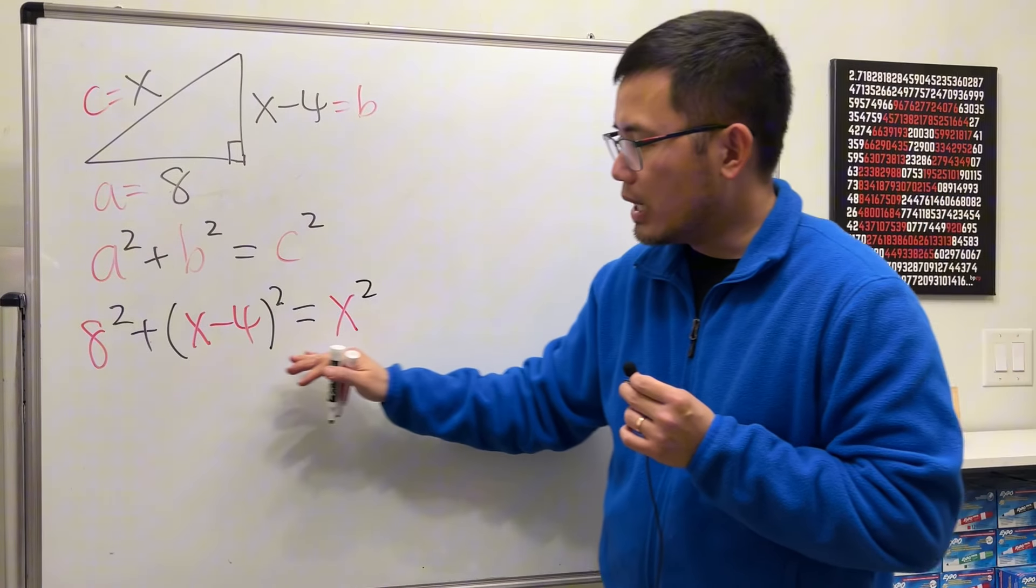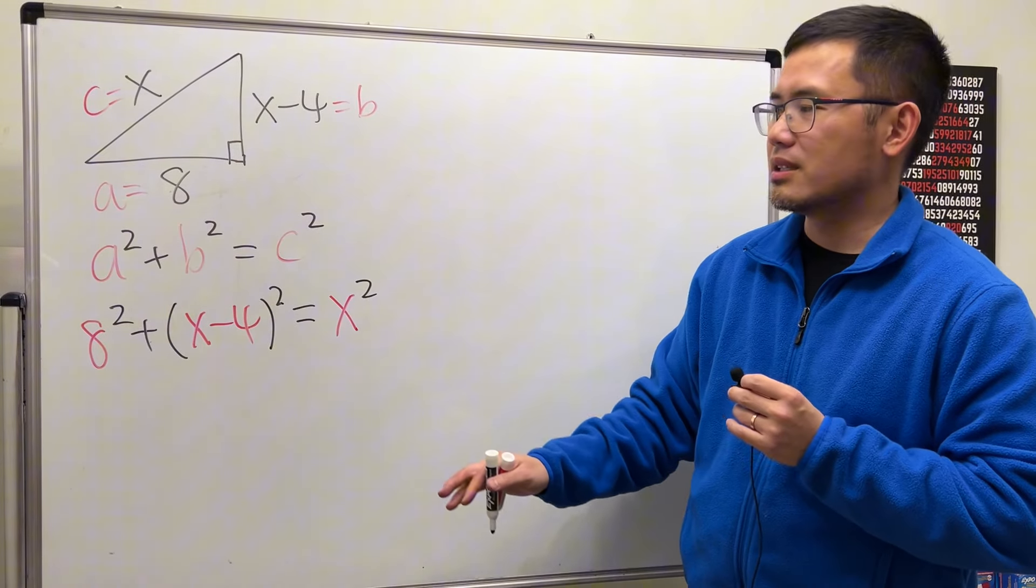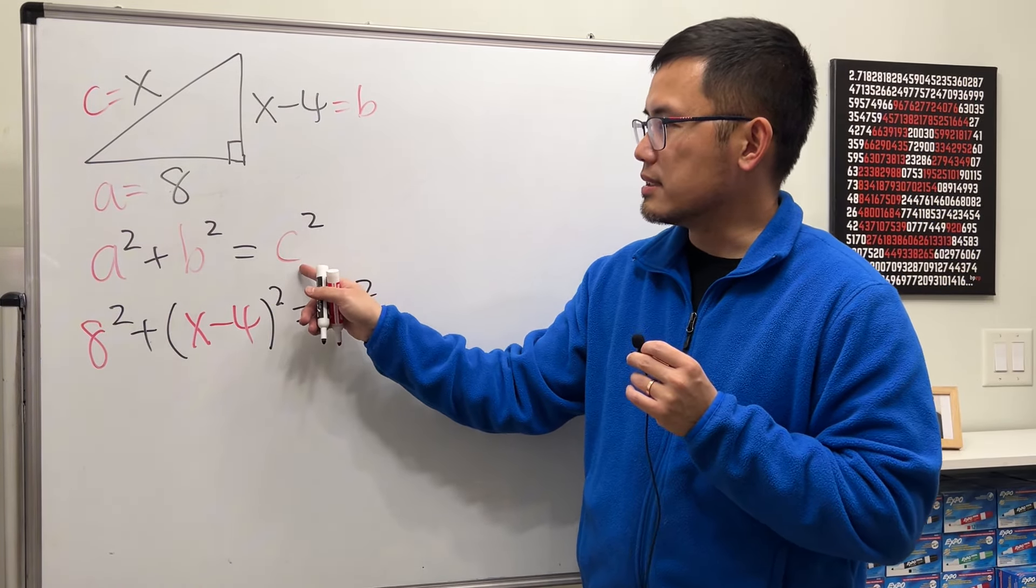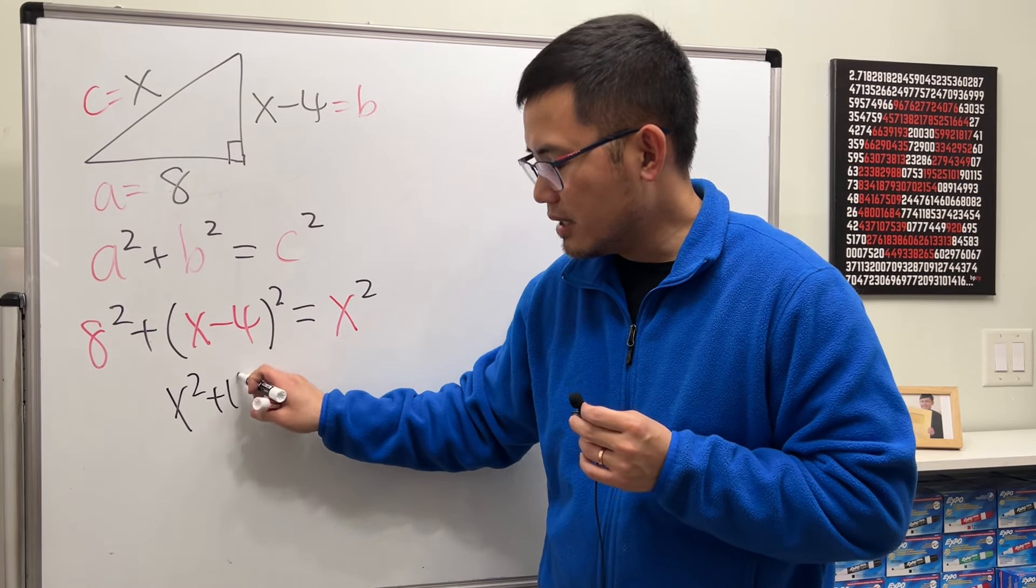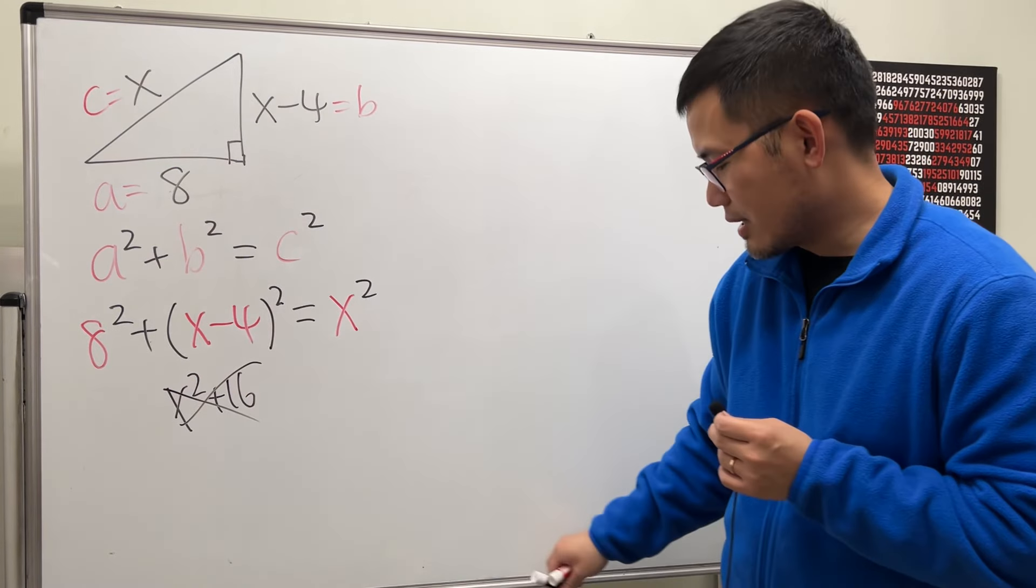So notice, now we have an equation with just x. So earlier you have that c is incorrect, because you forgot to replace the c with x. Now, we have to work this out. And earlier you put down x-squared plus 16. This right here is also not correct.